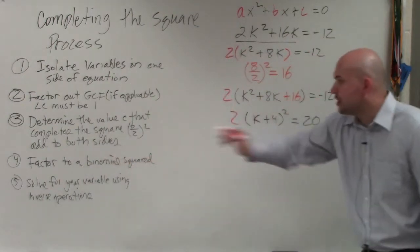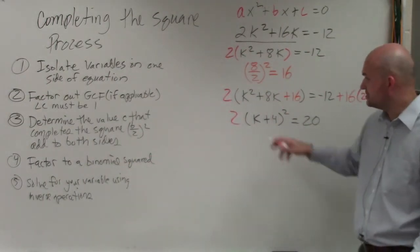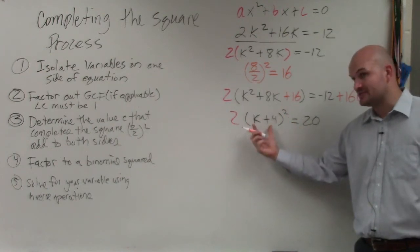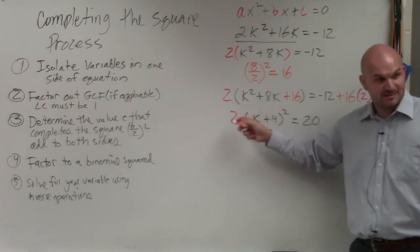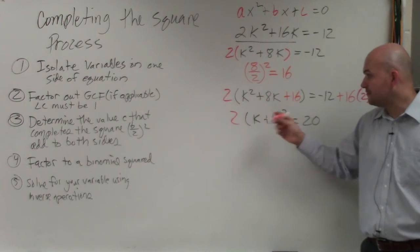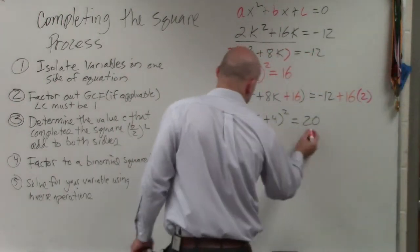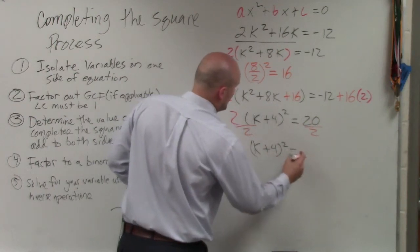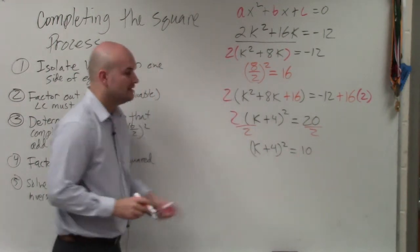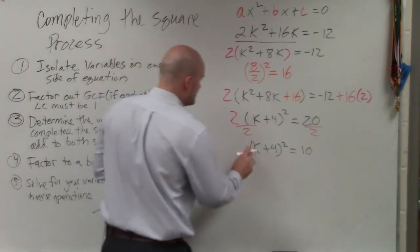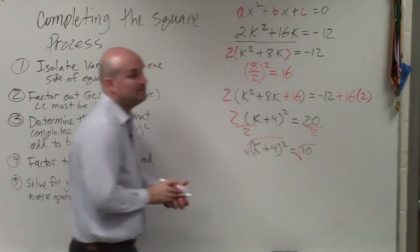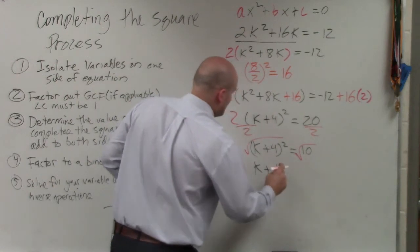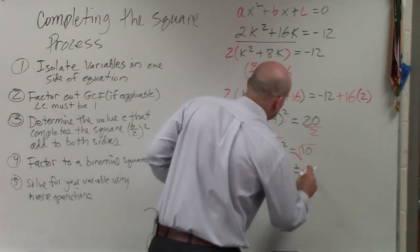OK. Now, last step is solve for your variable using inverse operations. So we have our variable. It's being added by 4 inside the parentheses. Then it's being squared. Then it's being multiplied by 2. So to solve for my variable, the first thing I need to do is divide by 2 on both sides. So I have k plus 4 squared equals 10. Now I undo the square root. Remember, when you introduce the square root, you have to include the plus and the minus. So it's plus or minus the square root of 10.